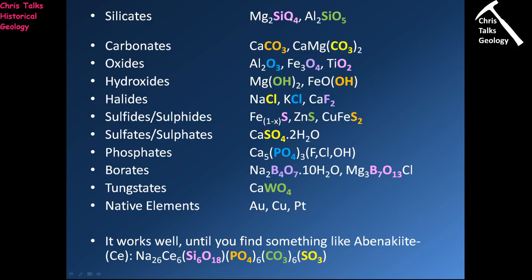This classification works wonderfully for relatively simple chemical formulas with just one group. But what happens with a more complex mineral that has multiple groups — for instance, a silicon-oxygen silicate group, a PO₄ phosphate group, a CO₃ carbonate group, and an SO₃ sulfite group?